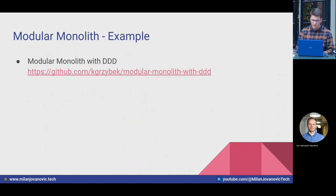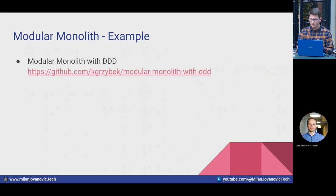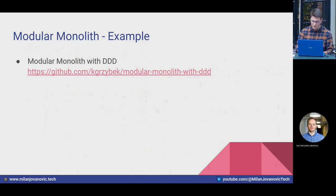An excellent example of what a modular monolith looks like is a repository you can find by googling 'modular monolith with DDD.' I recommend going through that GitHub repo — it's going to make a lot of sense when you see it in practice, since I'm speaking more theoretically here.